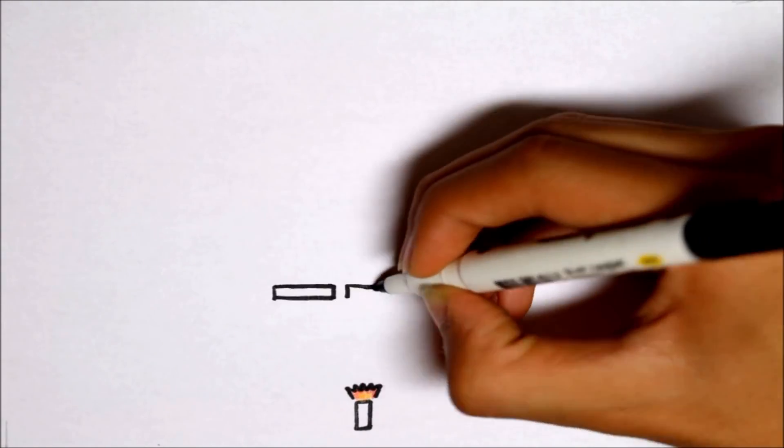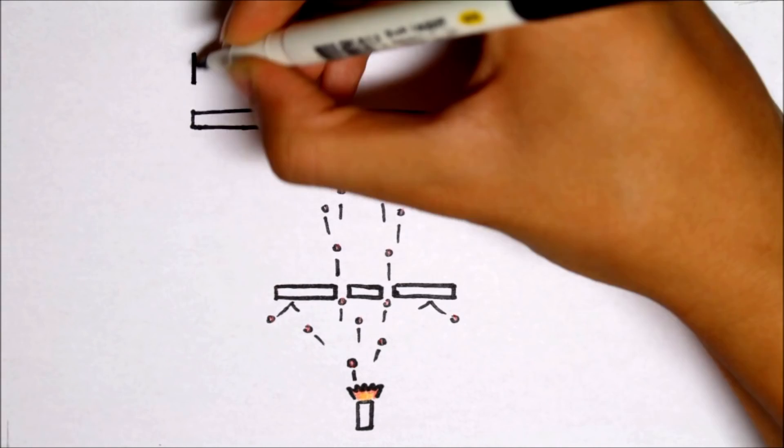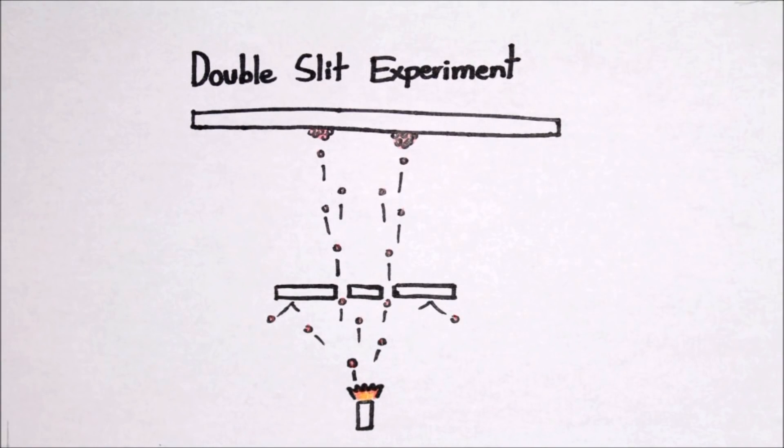In the 20th century, physicists observed the behavior of particles as they went through the double slit experiment, one of the most famous experiments in physics originally performed by Thomas Young.